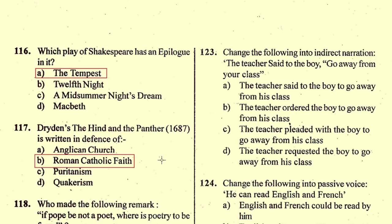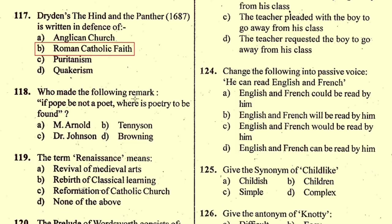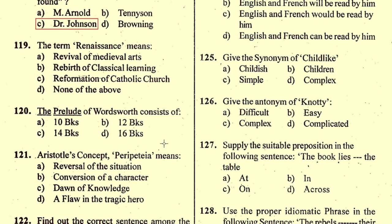Question number 118: Who made the remark 'If Pope be not a poet, where is poetry to be found'? The right option is C, Dr. Johnson. Question number 119: The term 'Renaissance' means — option B is correct, rebirth of classical learning. Question number 120: The Prelude by Wordsworth consists of — option C, 14 books, is the correct option.